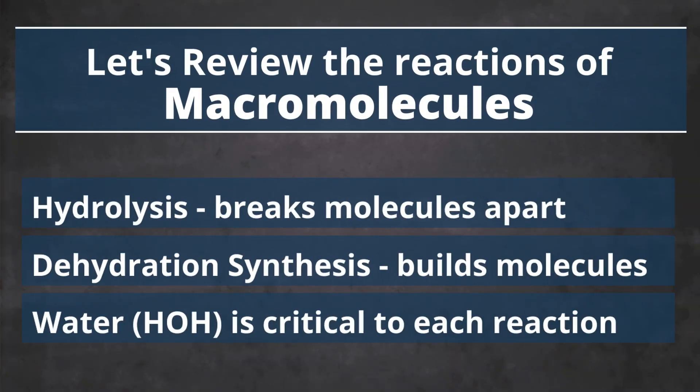Macromolecules are critical molecules of cells and life processes. Understanding how they are formed and broken down allows us to better understand how animals like rock pocket mice and kangaroo rats are able to survive in such a harsh environment. Hydrolysis breaks down food molecules, providing energy and nutrients the rodents need to carry out important life processes like maintaining body temperature. Dehydration synthesis reactions build new macromolecules by linking monomers into long chains or branched structures — essential to the chemistry of life for all living things.